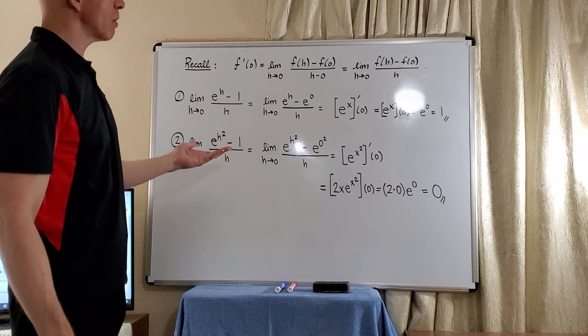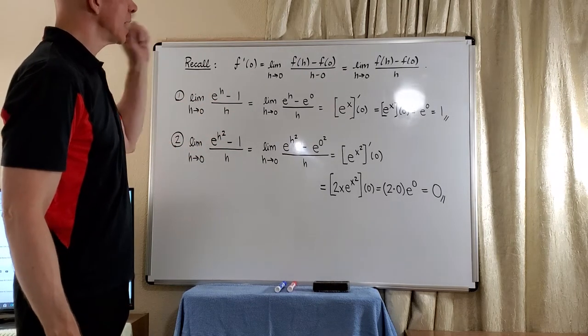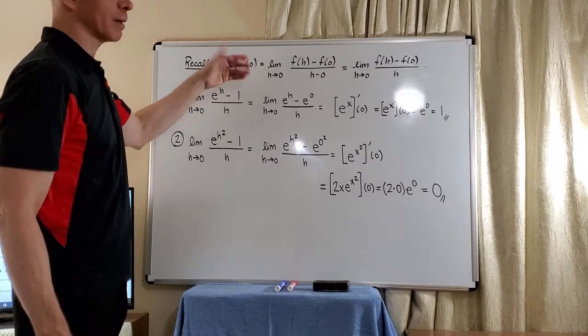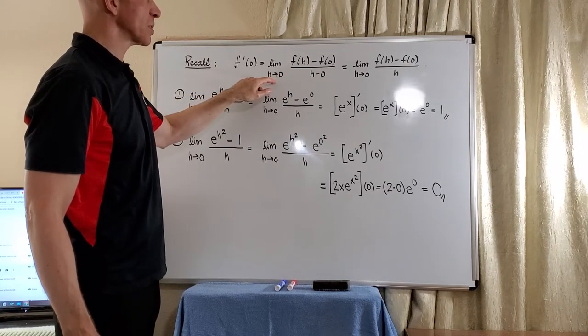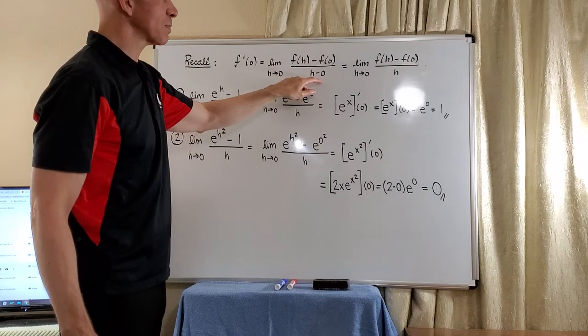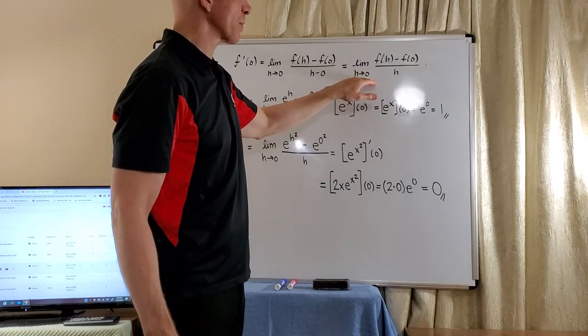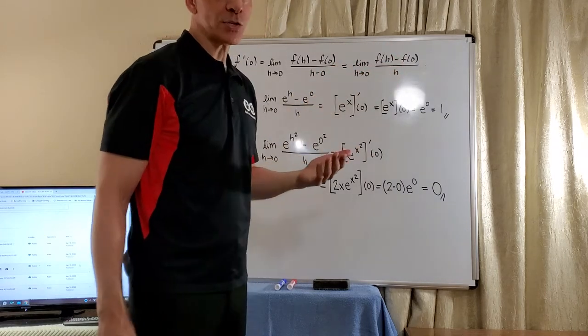And so let's recall that in certain occasions, you can actually write the derivative of a function f at 0, evaluated at 0, as follows: the limit as h approaches 0 of f of h minus f of 0 divided by h minus 0. And then of course, just write it simply as the limit as h approaches 0 of f of h minus f of 0 divided by h.